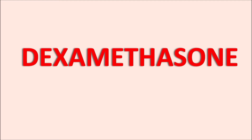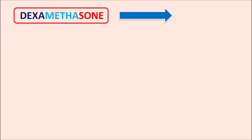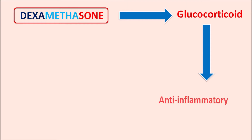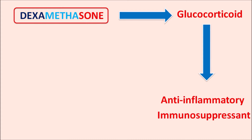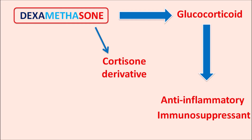Today we are going to discuss dexamethasone. The suffix '-zone' indicates this drug belongs to the glucocorticoid category. Being a glucocorticoid, this drug acts as an anti-inflammatory agent as well as an immunosuppressant. The suffix '-zone' also indicates this drug is a cortisone derivative with a few structural modifications.